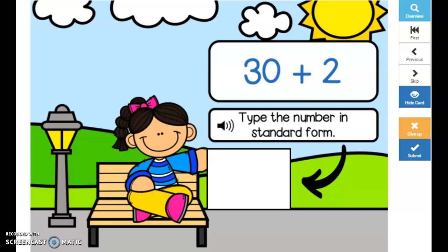For your activity today you are going to be going on to boom cards and you are going to be working with the place value to 99 activity.